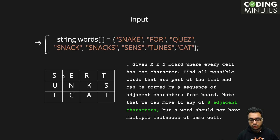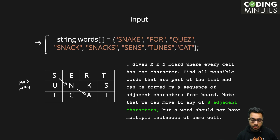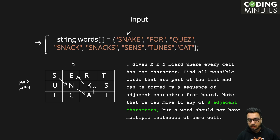We are given an m×n board where m is 3 and n is 4 — three rows and four columns. You need to find all possible words from the list that can be formed by adjacent characters. For example, can we form the word 'snake'? Yes — from S we go to N, then A, then K, then E. The word 'snake' can be formed. Can we form 'for'? No, 'f' is not there.